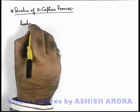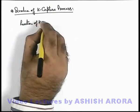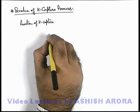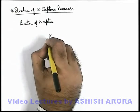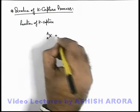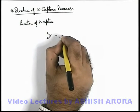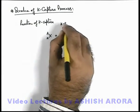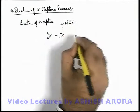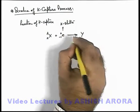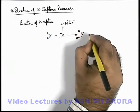If we write the reaction of K-capture process, then we know in K-capture a nucleus X with charge and mass number Z, A combines with an orbital electron, which is actually a K-shell electron, and transforms to the daughter nucleus Y with charge number Z-1 and mass number A.